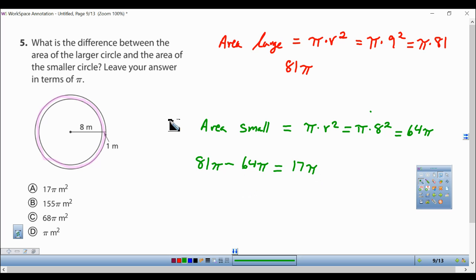And we're talking about area, so we're going to say it's in meters squared. So our answer is not going to be B, not going to be C, not going to be D. It's going to be A, 17 pi meters squared.